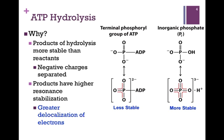Our second reason why the products are more stable has to do with resonant stabilization. This refers to delocalization of electrons. Looking again at the figure on the left, in our terminal phosphoryl group, our phosphorus atom is double bonded to one of the oxygens, and there are negative charges on the other two oxygen atoms. We can form a resonant structure that makes this a more stable structure. Comparing that with inorganic phosphate released following ATP hydrolysis, we have greater delocalization of electrons, greater resonant stabilization, and that means the product is more stable than the reactant or substrate. So we have two reasons why ATP hydrolysis is so energetically favorable: less charge repulsion and greater resonant stabilization.